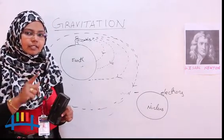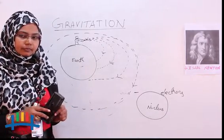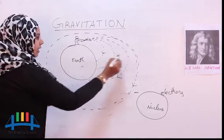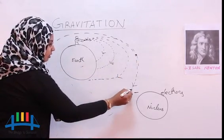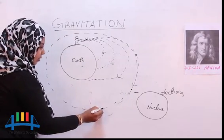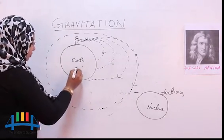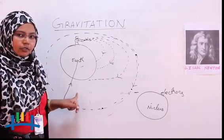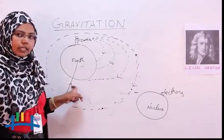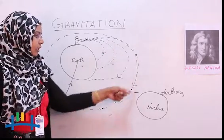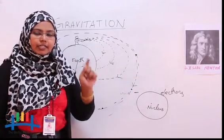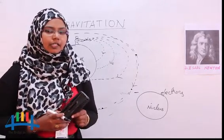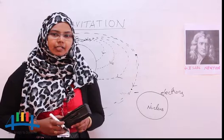Why is the ball continuously moving around the earth? Because at each and every point, earth is attracting this body. This attractive force is making the ball move continuously around the earth. That is the reason why the moon is revolving around the earth. By this we end our topic.